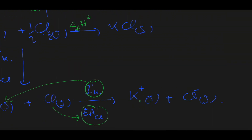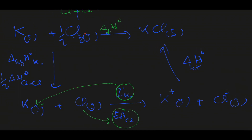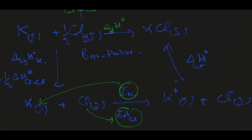Now that we have both ions in gaseous state, we can form the KCl crystalline solid using the lattice energy. After having represented the Born-Haber cycle, we now apply Hess's Law to determine this lattice energy.